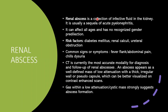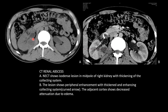Renal abscess is a collection of infective fluid in the kidney, a complication of acute pyelonephritis. It can affect any age or gender. Risk factors include diabetes mellitus and renal calculi. Most common signs are fever, flank pain, abdominal pain, chills, and dysuria. CT is the most accurate method; an abscess appears as a well-defined mass of low attenuation with a thick irregular wall or pseudocapsule, better visualized on contrast scans. Gas within the low attenuation mass strongly suggests abscess formation.